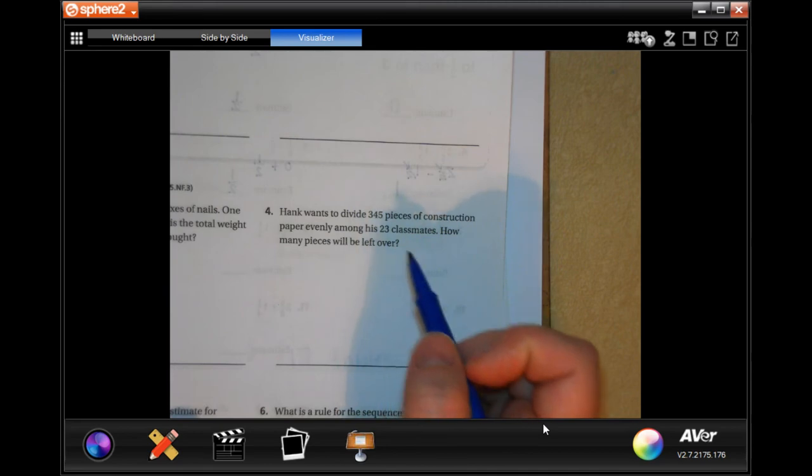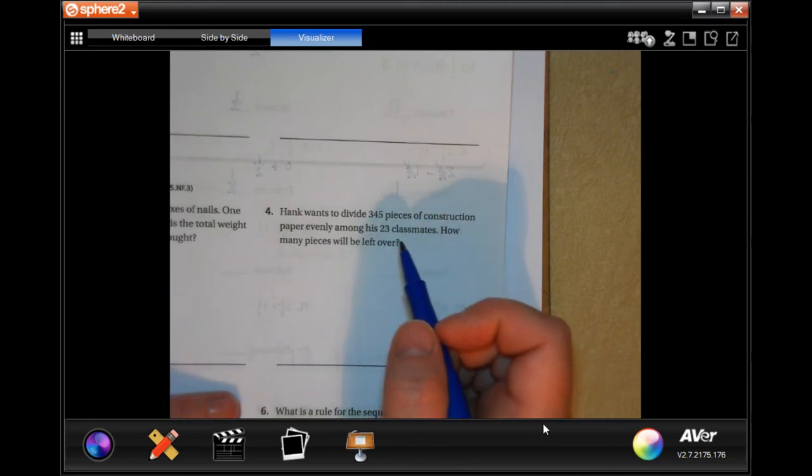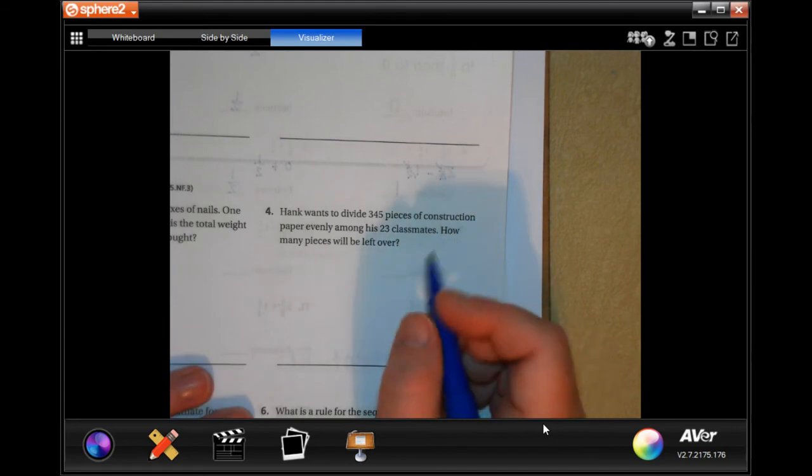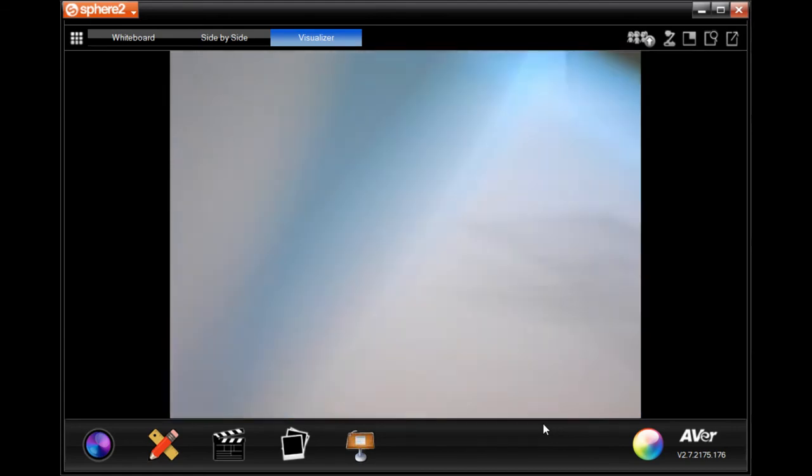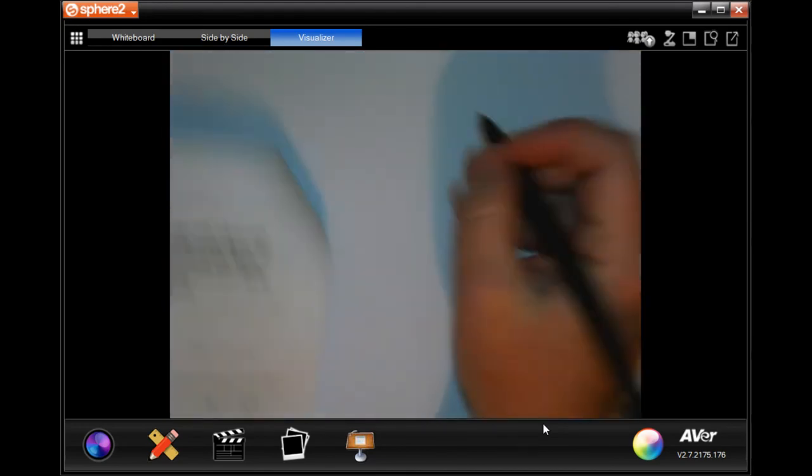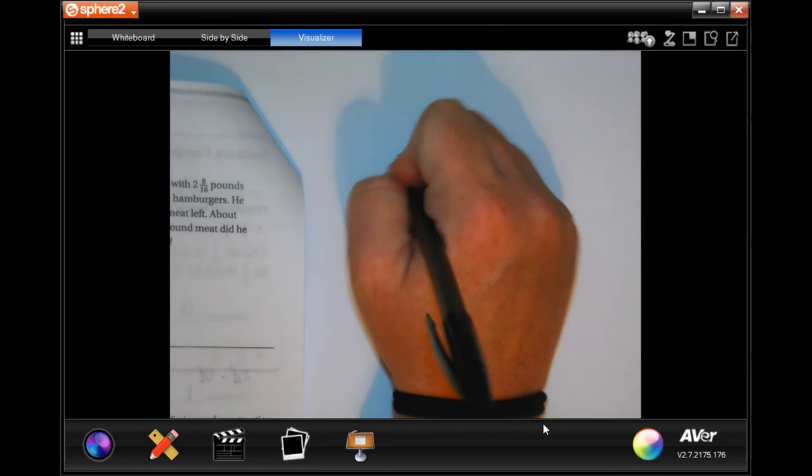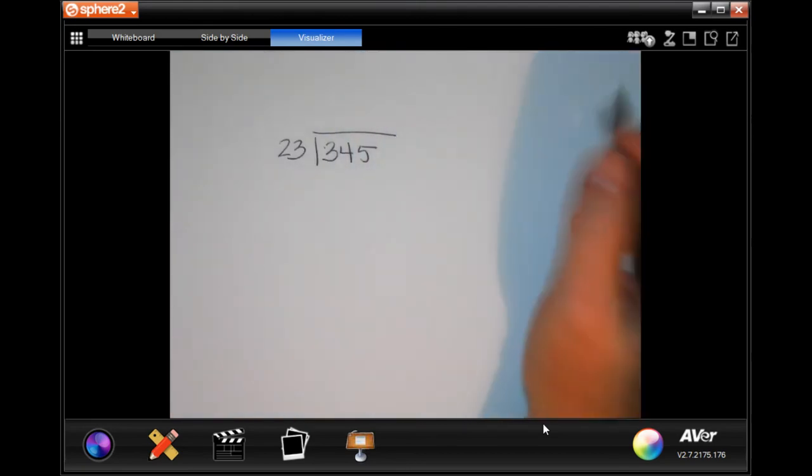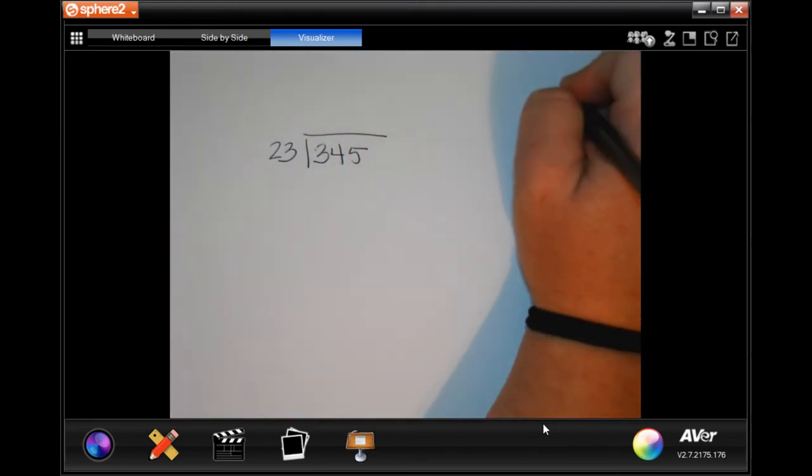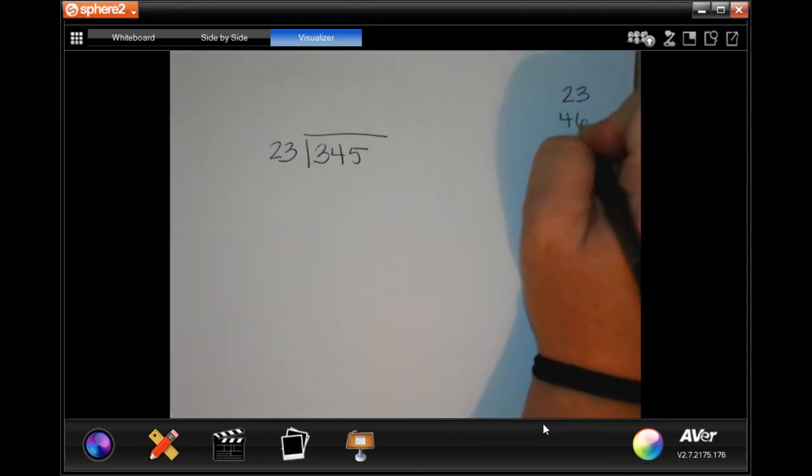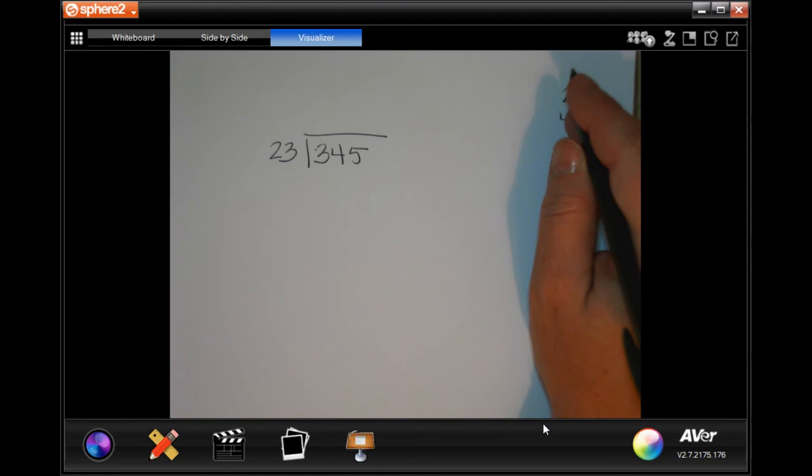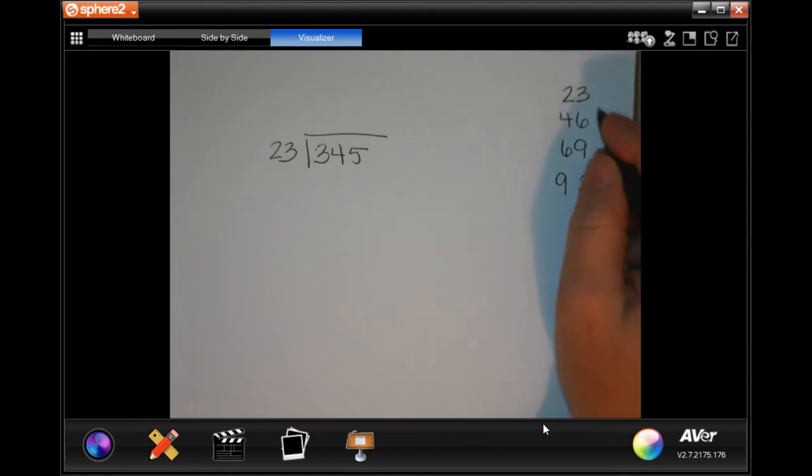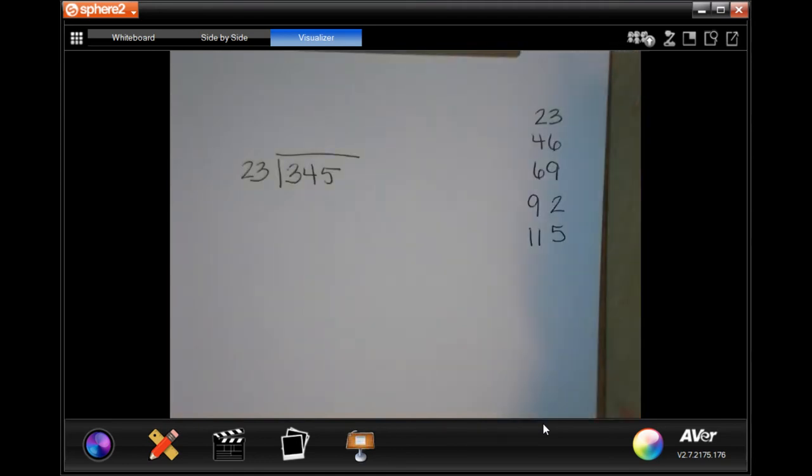Hank wants to divide 345 pieces of construction paper evenly among 23 classmates. How many pieces will be left over? So he wants to know the remainder. I'm going to do that on a separate piece of paper so we can fit it all in. So 345 and we're dividing that by 23. I'm going to write down some multiples of 23 because I do not happen to know them off the top of my head.